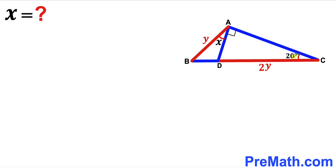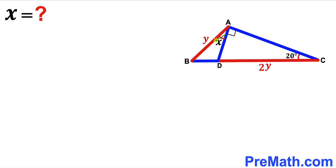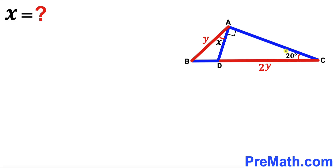Welcome to pre-math. In this video we have a big triangle ABC that consists of two triangles: the right triangle ACD and a smaller triangle ABD. Side AB has length Y, segment CD has length 2Y, angle ACD is 20 degrees, angle CAD is 90 degrees, and angle DAB is represented by X. Our task is to calculate the value of angle X.